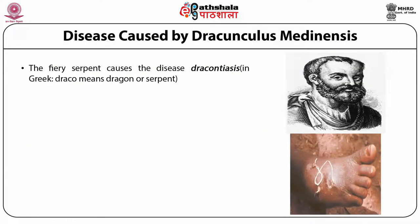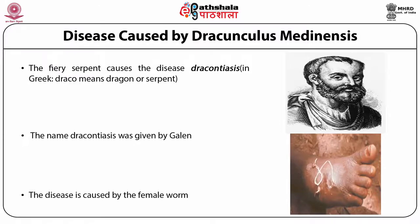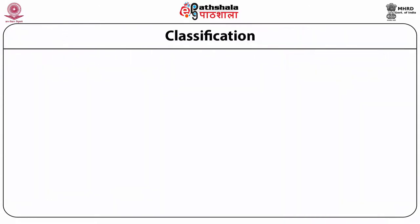The disease caused by Dracunculus medinensis is called Dracunculiasis. Draco means dragon or serpent, and hence the name. The name Dracunculus was given by Galen. The disease is caused by the female worm. Before talking about Dracunculiasis in detail, let us first classify Dracunculus.